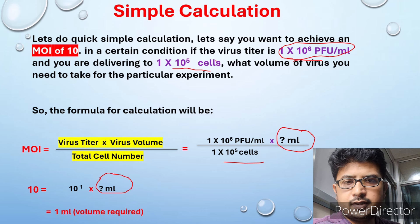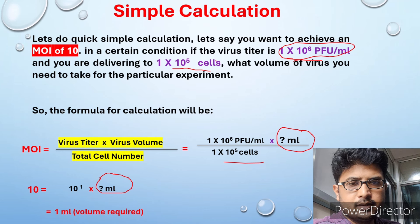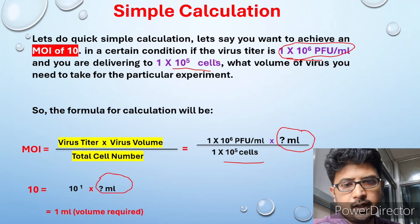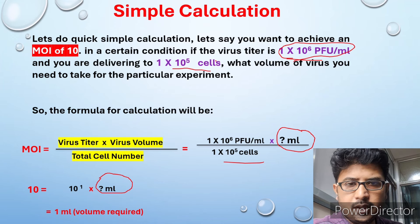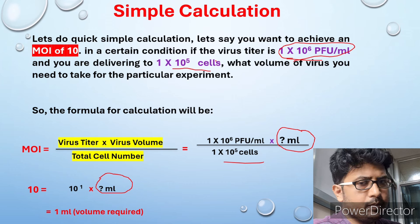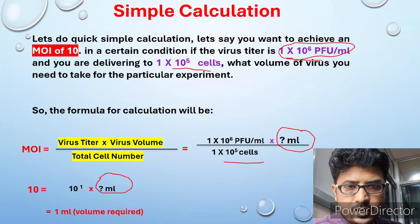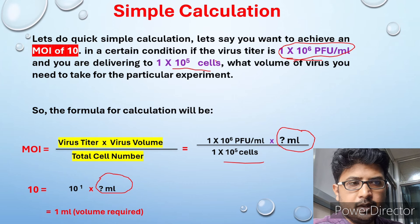MOI is nothing but the ratio of infectious agent to infection target — the titer and the target numbers are what matter. I hope you are clear with the MOI section. If you have any doubts, you can reach me on Telegram or in the comment section. Thank you very much.